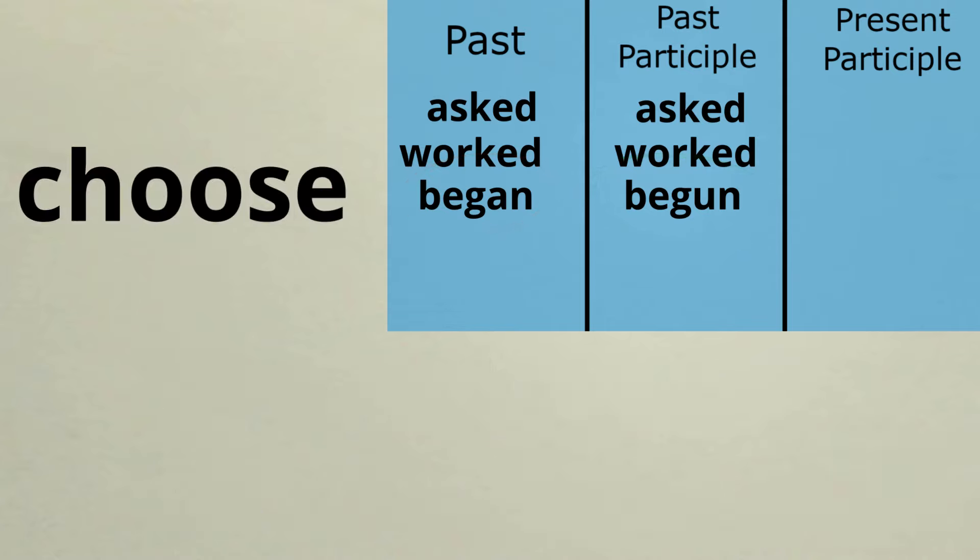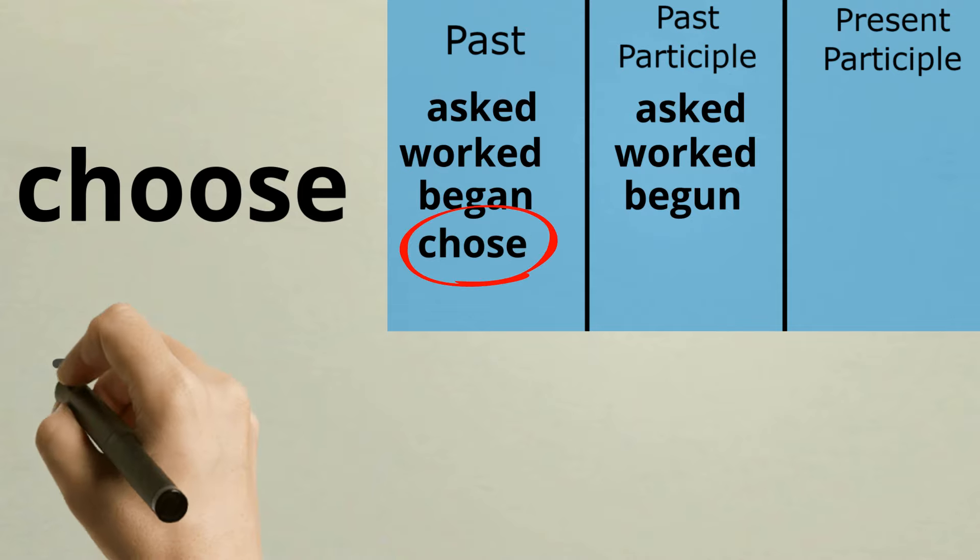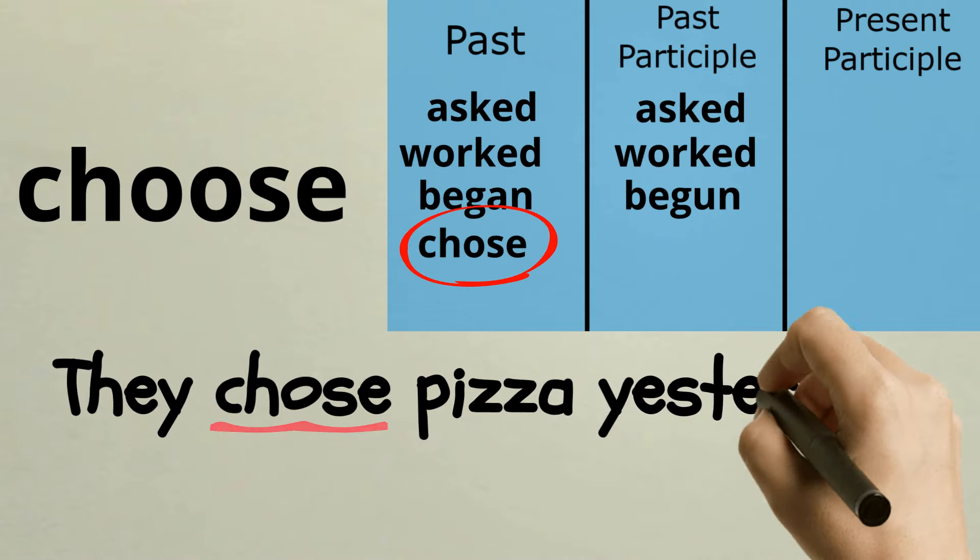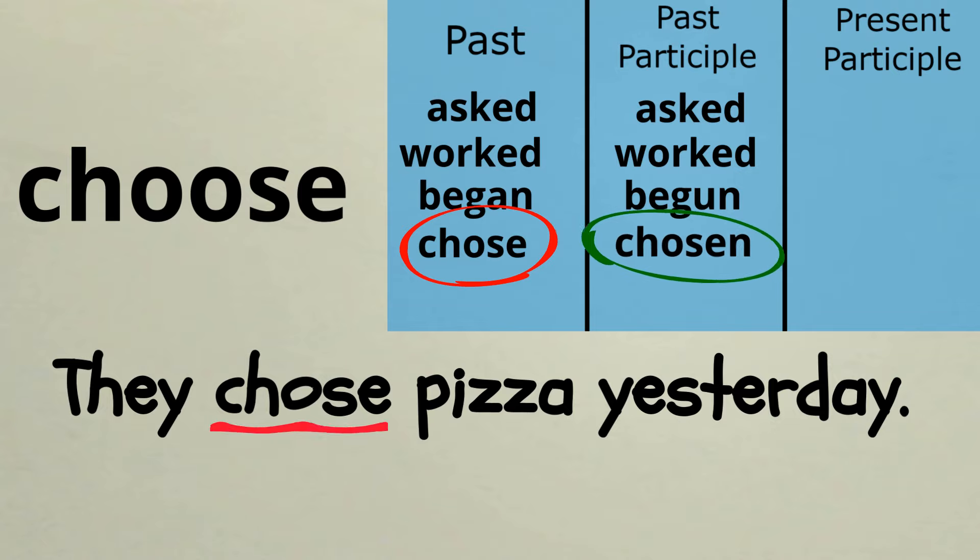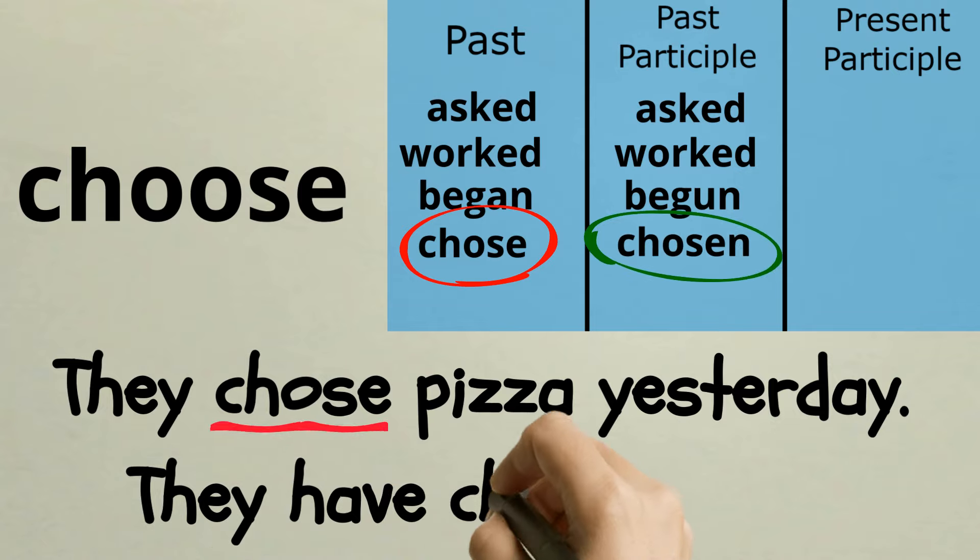The past tense of choose is chose. They chose pizza yesterday. The past participle is chosen. They have chosen pizza.